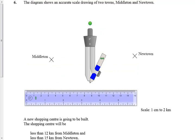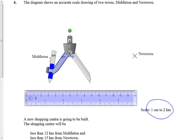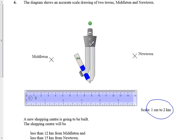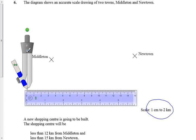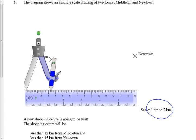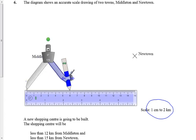We need to pay attention to our scale down here. One centimeter is every two kilometers. So for Middleton, I've got to draw a line which is six centimeters, which is going to be 12 kilometers.